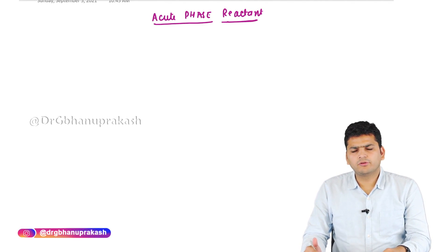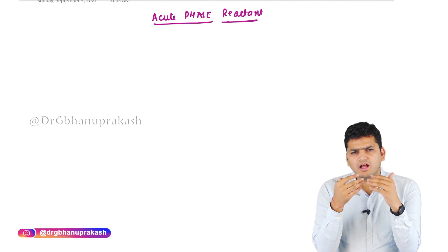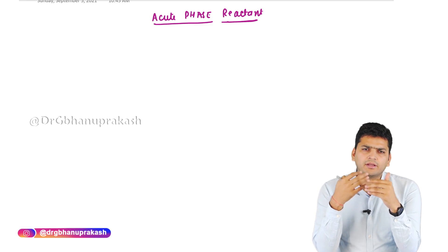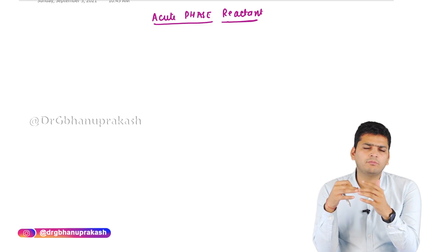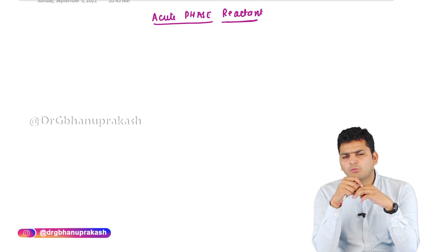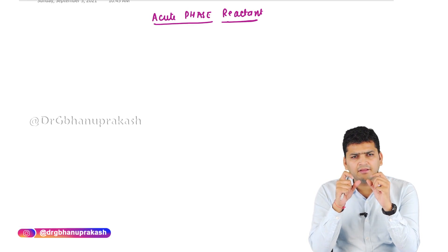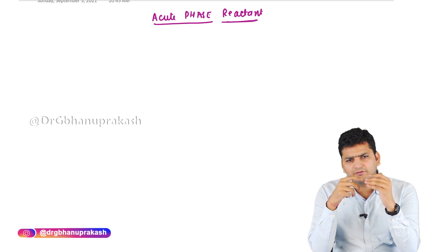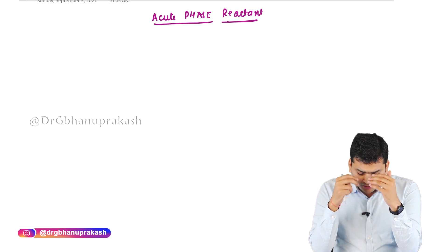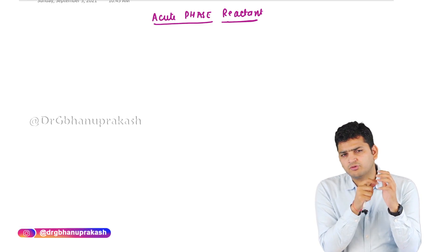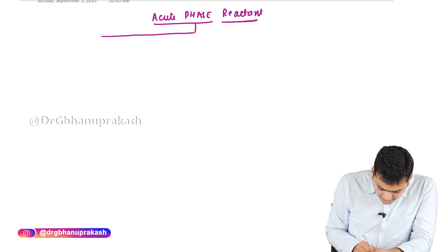Welcome guys. In this topic we are going to discuss about something called as acute phase reactants. Acute phase reactants are the molecules which are going to increase or maybe decrease during the period of acute inflammation or during a neoplastic etiology. The molecules that increase during inflammation are called as the positive acute phase reactants.